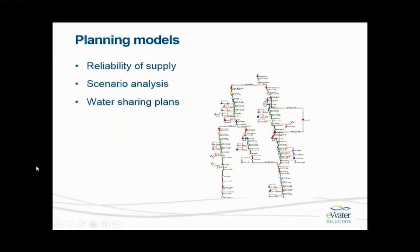Planning models — what are they used for? Typically they are used for assessing the reliability of supply of a water system, scenario analysis, policy options, upgrading options, and climate change options. The primary use today is preparation of water sharing plans. Many Australians have heard of the Murray-Darling Basin and the Basin Plan — that's a case in point of water sharing plans.